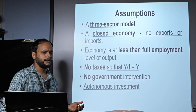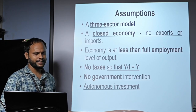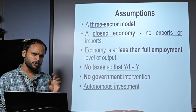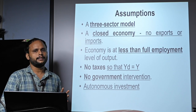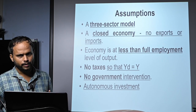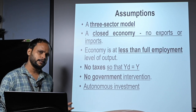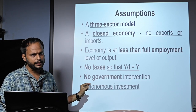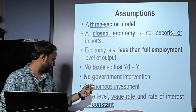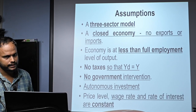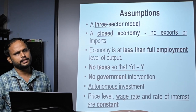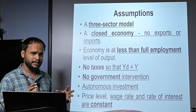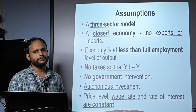Another important assumption is that investment is autonomous — independent of income, so whether income is high or low, investment remains the same, which is why the investment curve is a horizontal straight line. The last assumption is that prices, wage rates, and the rate of interest — all prices of factors of production — are assumed to be constant. Changes in these variables will not influence the equilibrium level of output.